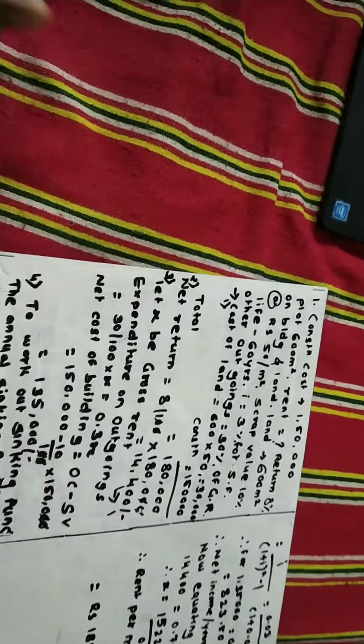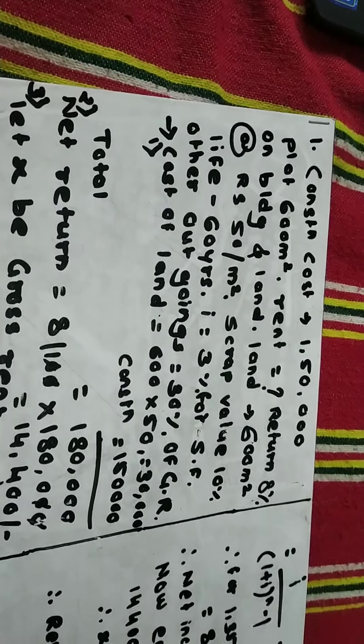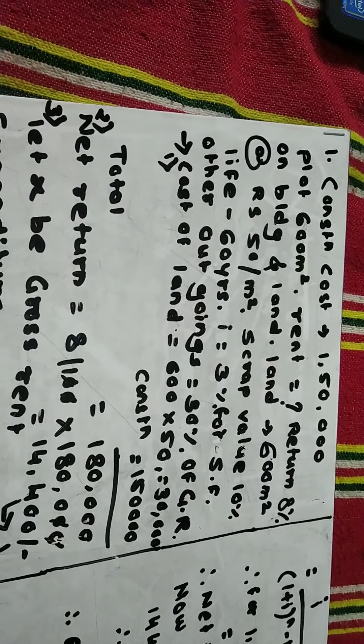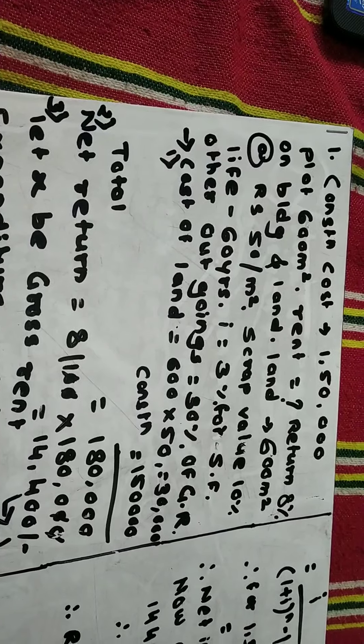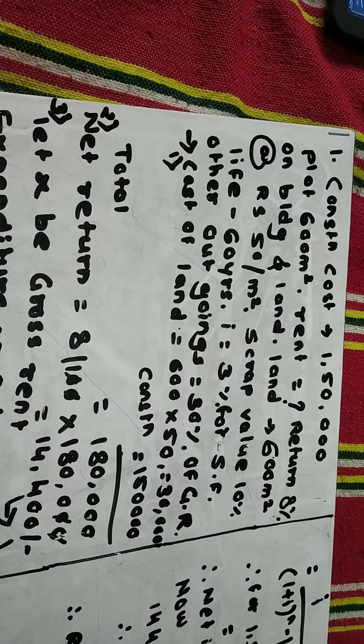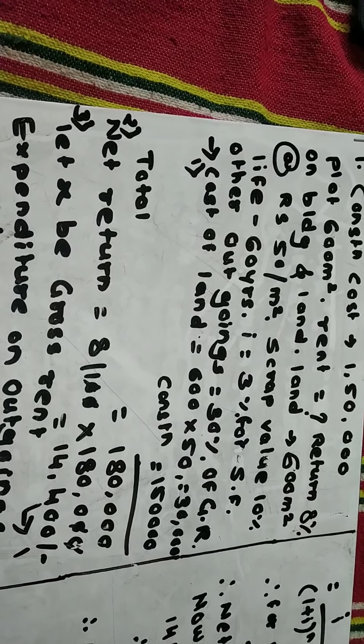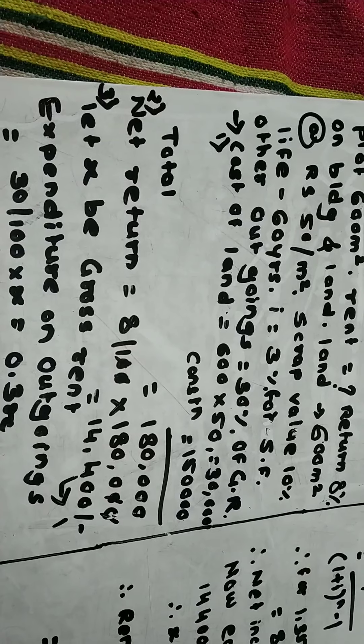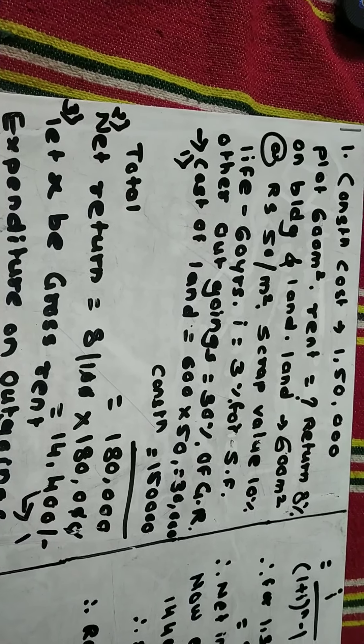In this way, when we are given the construction cost, the land cost in the form of plot area and rate per meter square, the expected return, the scrap value, the life of the building, the rate of interest for the sinking fund, and the outgoings as a percentage of gross rent, we use these steps and formulas to find the monthly rent for the given building. Thank you, students.